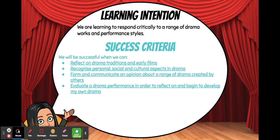To be successful we need to be able to reflect on drama traditions in early films, and we've been doing that by looking at silent movies and different techniques that they used, particularly about a hundred years ago — looking at filming techniques, the sort of cameras they used, and the different types of pans they would use to film people and make their movies.